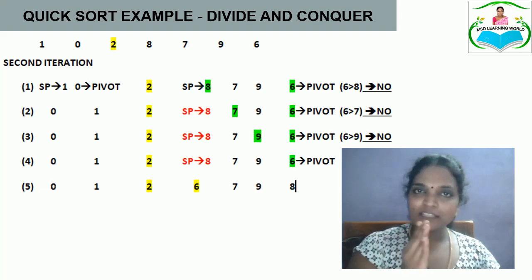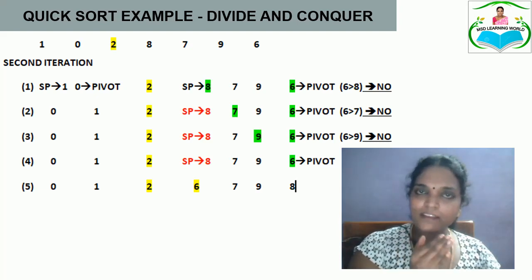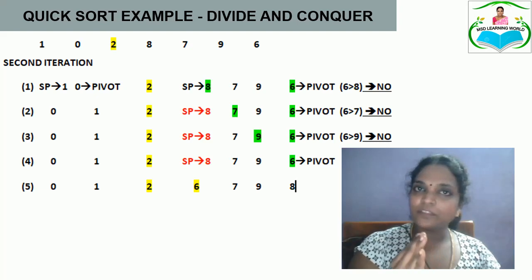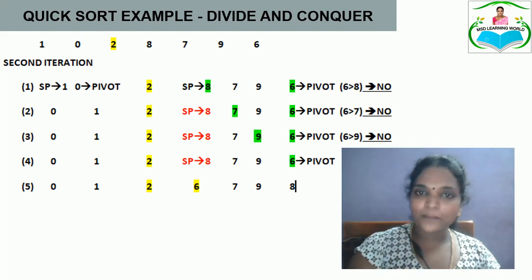For the left subarray [1, 0]: 0 is taken as the pivot element and 1 is the second pointer. We check: is 0 less than 1? Yes. Since 0 is less than the pivot and the second pointer has no next element, 0 and 1 get swapped. The left subarray is now in sorted order: 0, 1, 2.